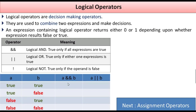If A is not true — meaning A is false — then the combined expression using logical AND will not be true either. With logical OR, however, if either one statement is true, the output can still be true, because the first statement is true.